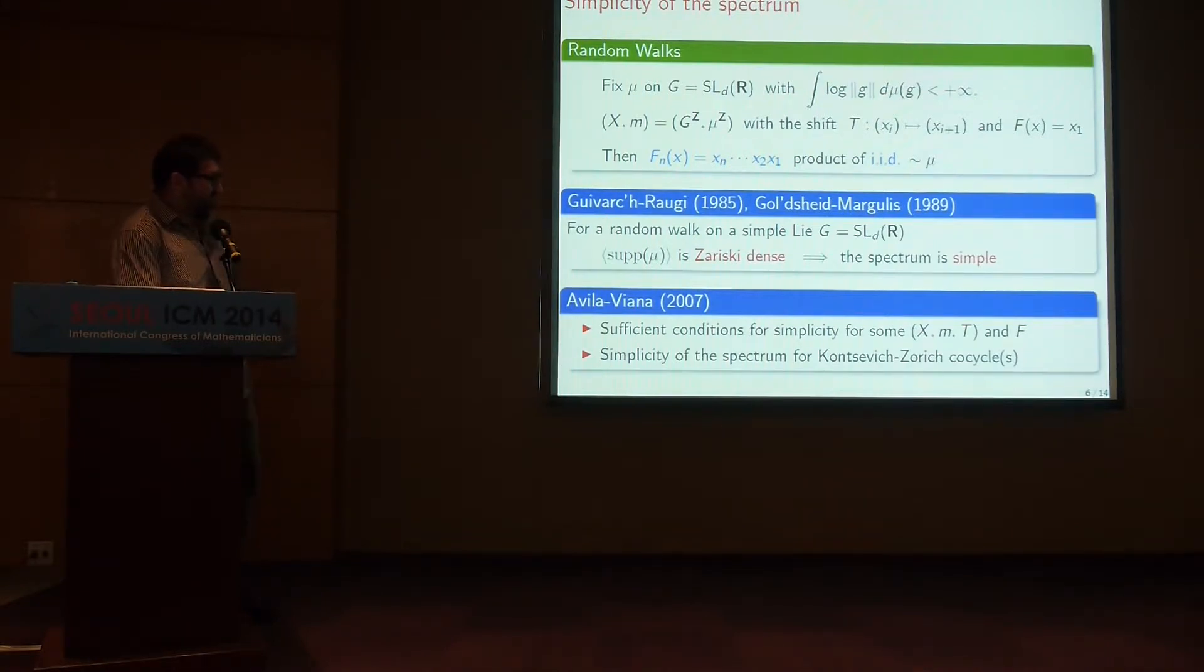Much more recently, Avila and Viana were able to formulate conditions that give us simplicity of the spectrum in much greater generality. There are assumptions on the underlying dynamics and some assumptions on the cocycle that have to be verified. These conditions, for example, allow them to prove simplicity of the spectrum for conservative Kontsevich-Zorich cocycles. This has important implications to dynamics and rational billiards, and might be mentioned in another talk.